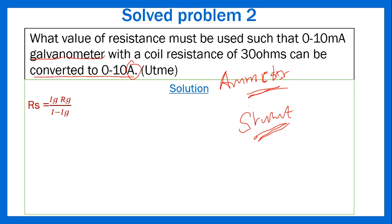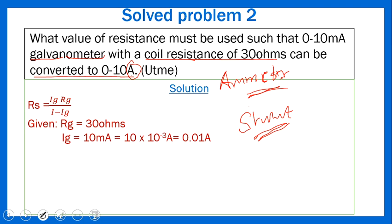Identifying parameters: RG = 30 ohms. IG = 10 milliampere; converting: IG = 10 × 10⁻³ = 0.01 ampere. The maximum current to detect is I = 10 ampere. Substituting: RS = (0.01 × 30) / (10 − 0.01).